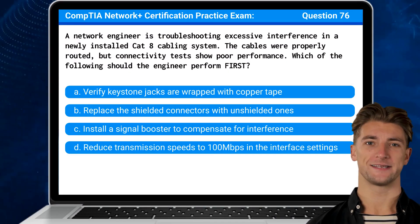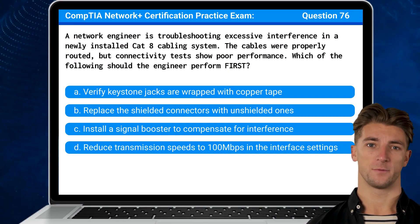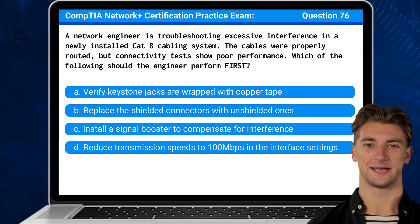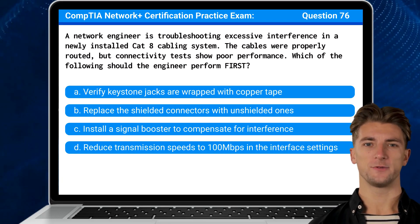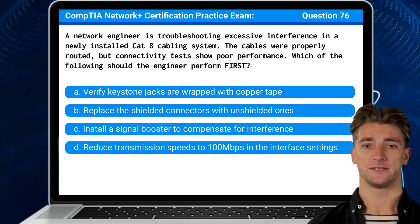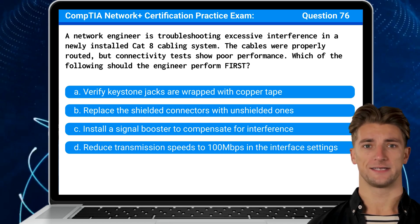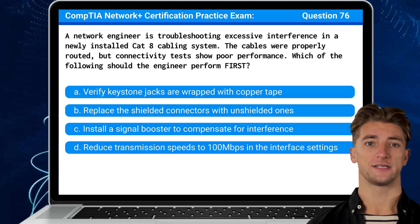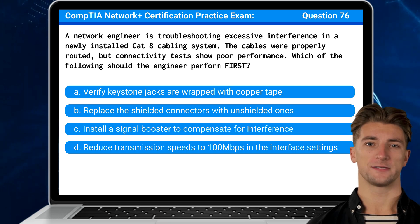Question 76: A network engineer is troubleshooting excessive interference in a newly installed CAT-8 cabling system. The cables were properly routed but connectivity tests show poor performance. Which of the following should the engineer perform first?